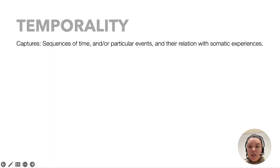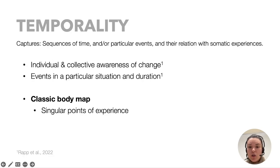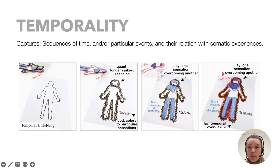The first theme, Temporality, refers to capturing the relation between sequences of time, or particular events, and the felt sensations and emotions. The classic body map design often prompts a focus on singular points of the experience, but several of our designs explored other temporalities. For example, one participant captured the different stages of her panic attacks using transparent sheets stuck one on top of each other, starting with tension all over the body depicted in black, then at the peak adding anxiety depicted in blue, and finally calmness at the end overcoming both the tension and the anxiety.